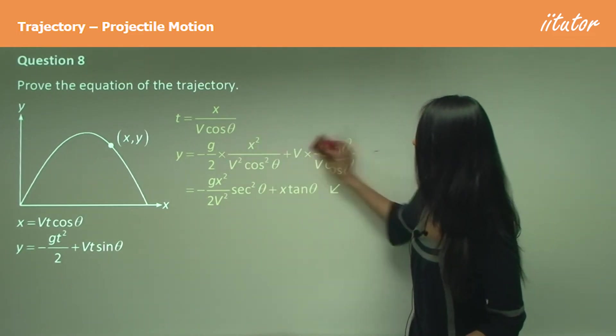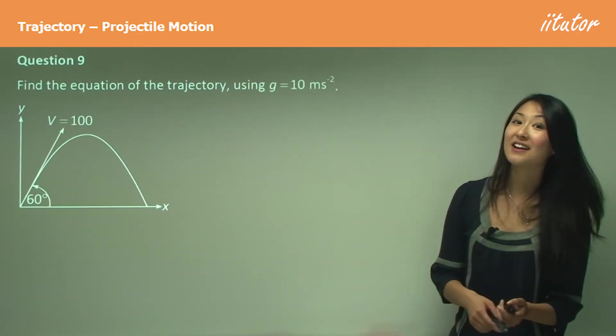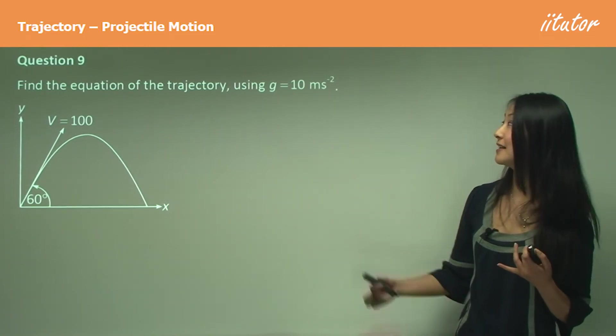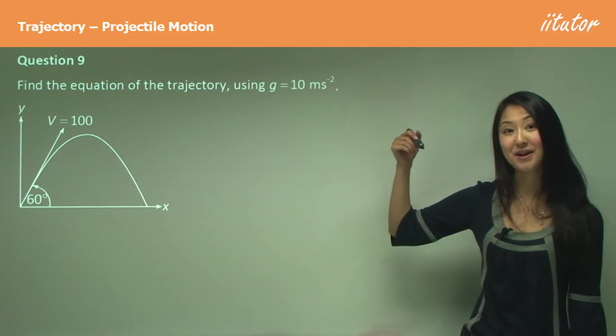So now we want to find a specific equation of the trajectory by using gravity equals to 10 meters per second squared, and we have our projectile angle here is 60 degrees, and our velocity is 100.